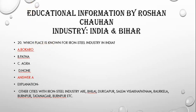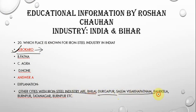The next question is: which place is known for iron and steel industry in India? The answer is Bokaro — also known as Bokaro Steel City. Other cities with iron and steel industry are Bhilai, Durgapur, Salem, Visakhapatnam, Rourkela, Burnpur, and Tatanagar.